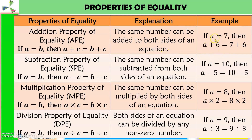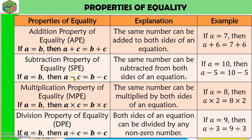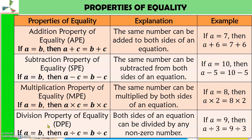For example, if A is equal to 7, then A plus 6 is equal to 7 plus 6. The second one is the SPE — subtraction property of equality — meaning the same number can be subtracted from both sides. The same concept goes with multiplication property of equality and division property of equality.